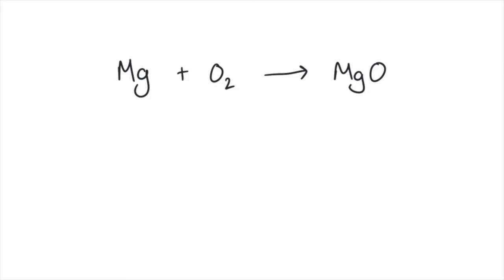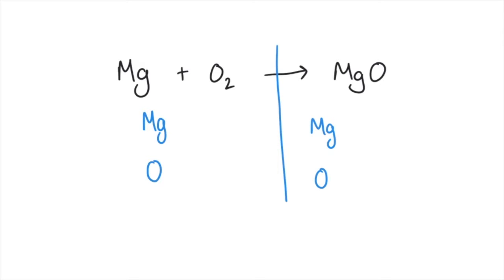So they've got the same number of atoms of each element on both sides of the equation. So let's have a look at this equation: magnesium plus oxygen makes magnesium oxide. The first thing to do is to draw a line down the middle. On the left, we've got magnesium and we've got oxygen. On the right-hand side, we should have the same elements — we've also got magnesium and oxygen. Let's count how many atoms we've got of each. On the left, we've got one atom of magnesium and two atoms of oxygen. On the right-hand side, we've got one atom of magnesium and one atom of oxygen. So the magnesiums are balanced, but the oxygens aren't.